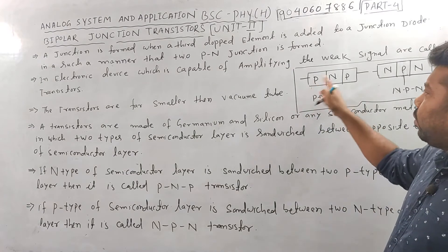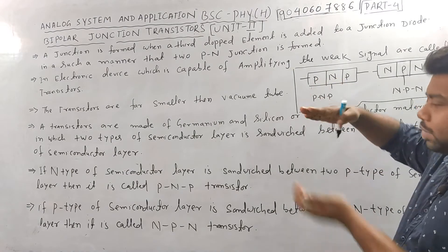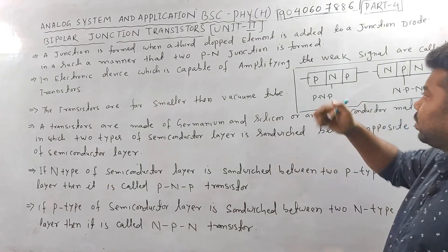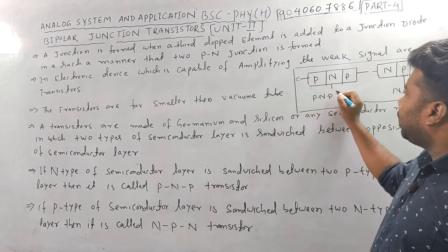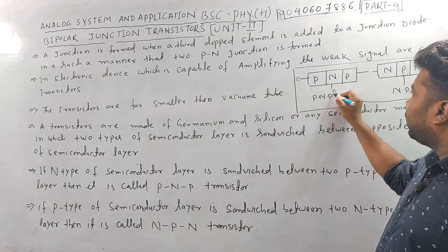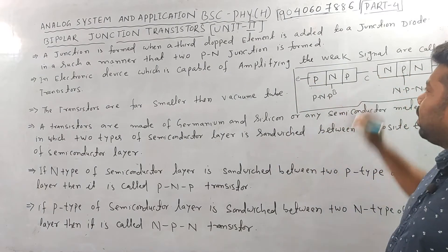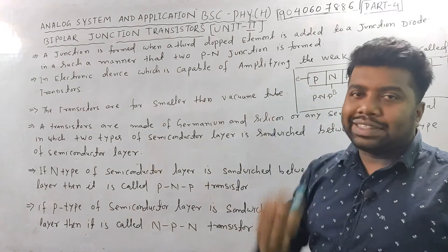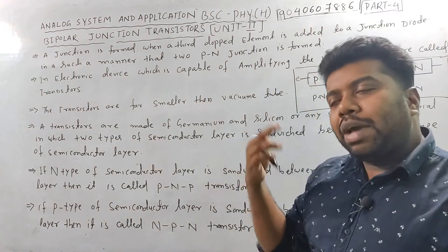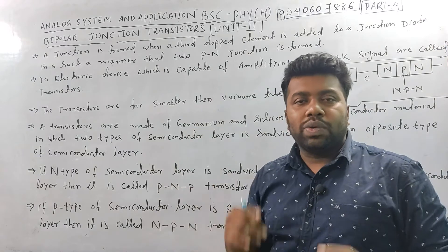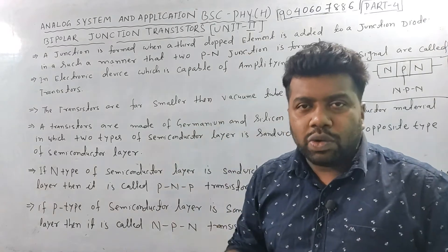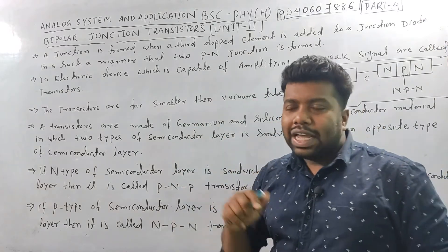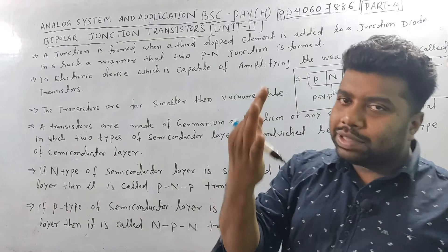What is the N-type semiconductor? It is sandwiched between two P-type semiconductors. This gives us the emitter, the base, and the collector. So the triode has three terminals. The PN junction is the diode.